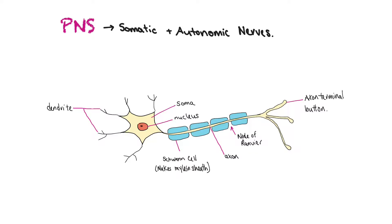This part here is known as the soma, also more commonly called the cell body. In that cell body are most of your organelles — your nucleus and so on. This long projection is basically a long extension of the cytoplasm of the cell body, and it has a special name: the axon. It branches out at the end into axon terminals, or axon terminal buttons.